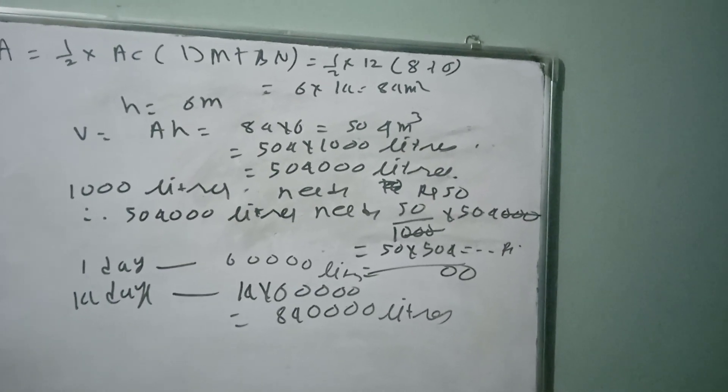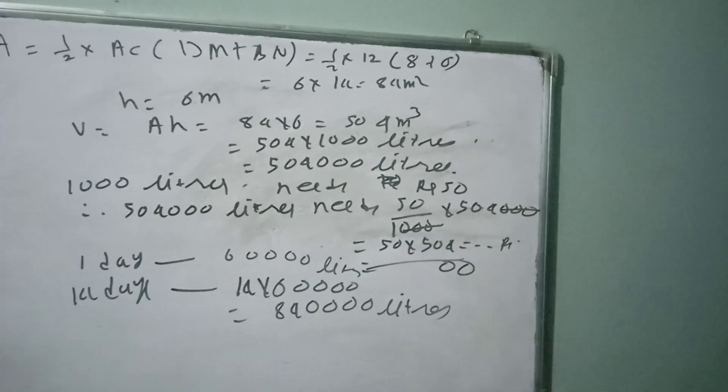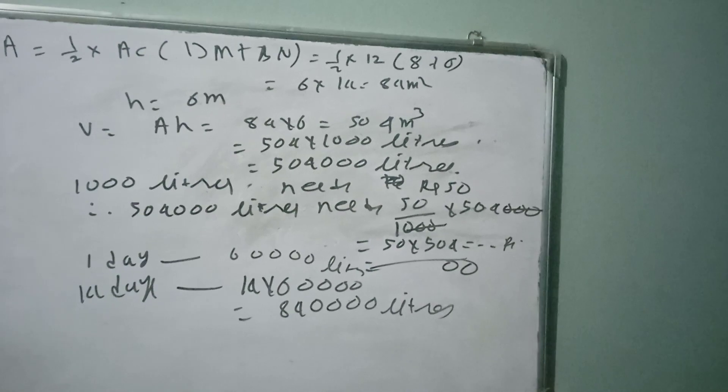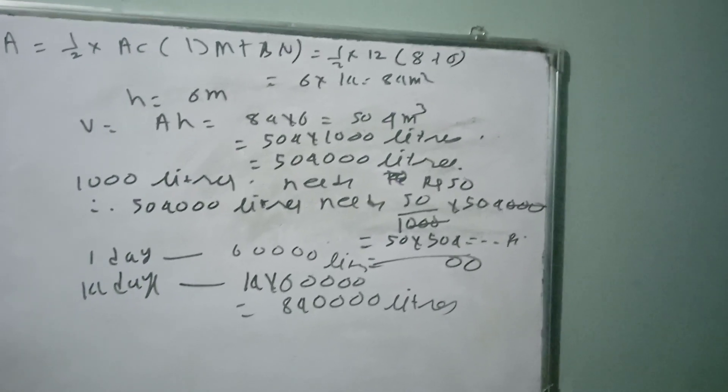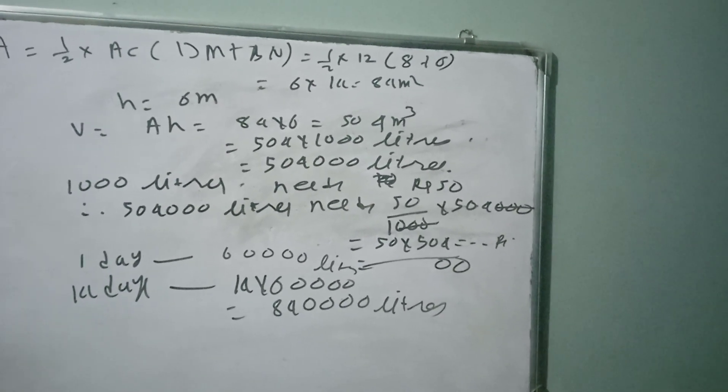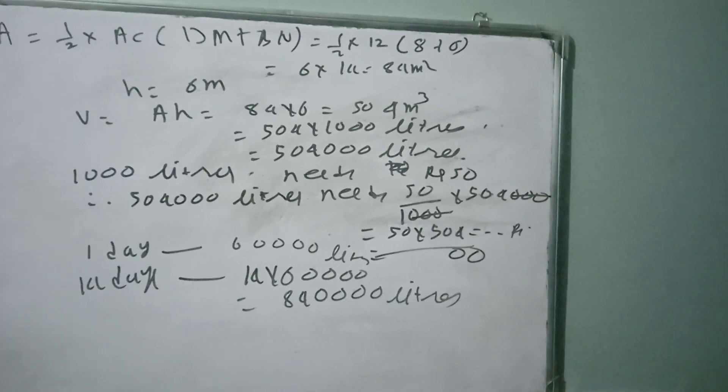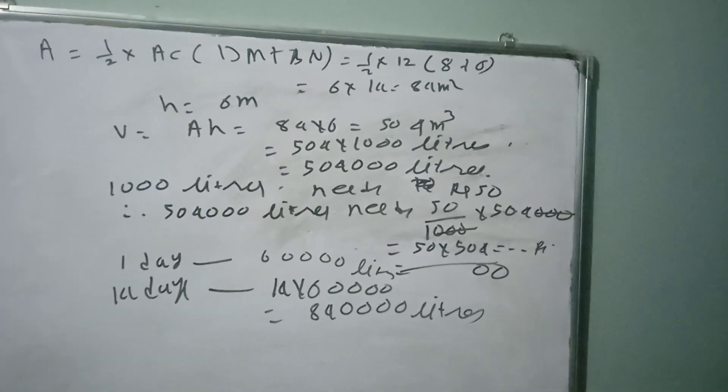That means half into 12 into bracket 8 plus 6 meter as shown, 12 by 2, 6 into 14, 84 square meter is the area of the rectangular field. Height is 6 meter.